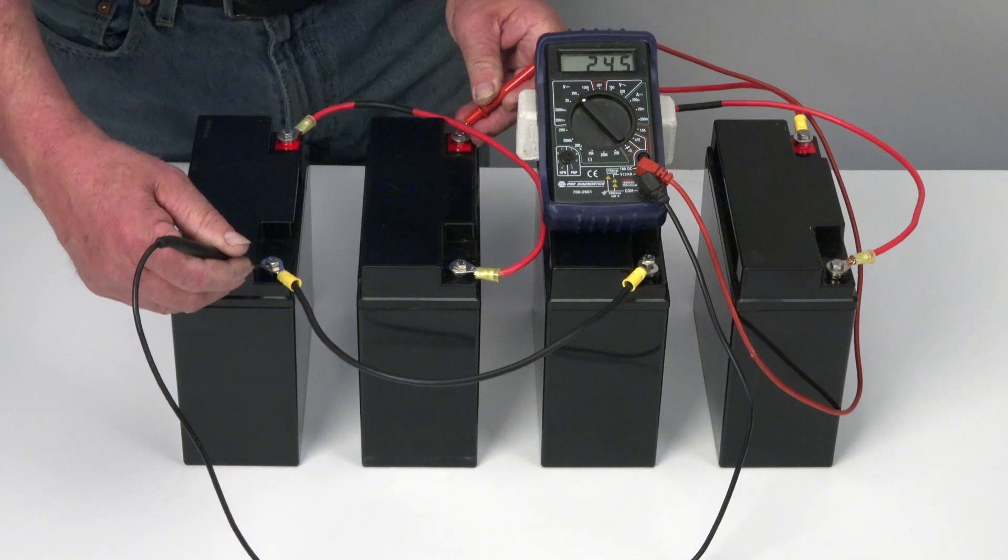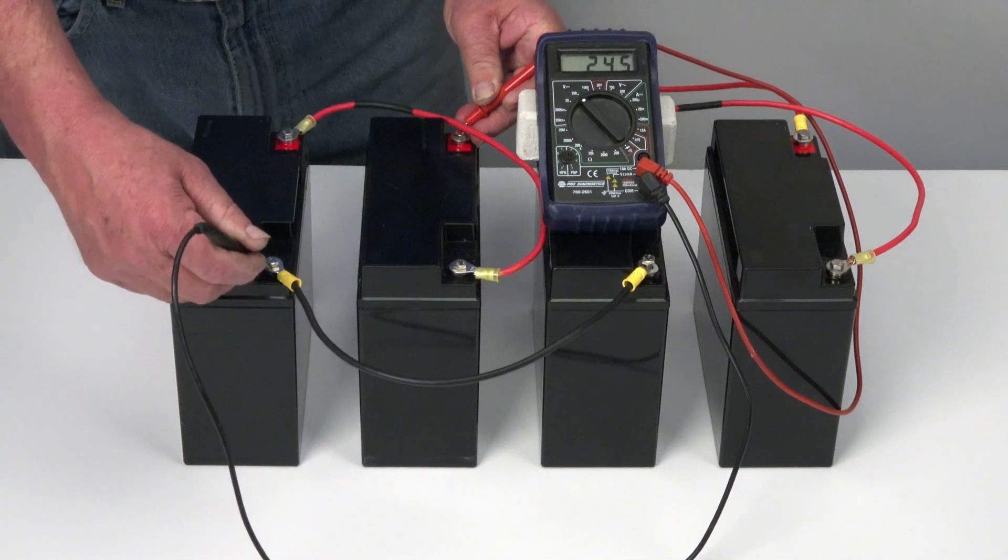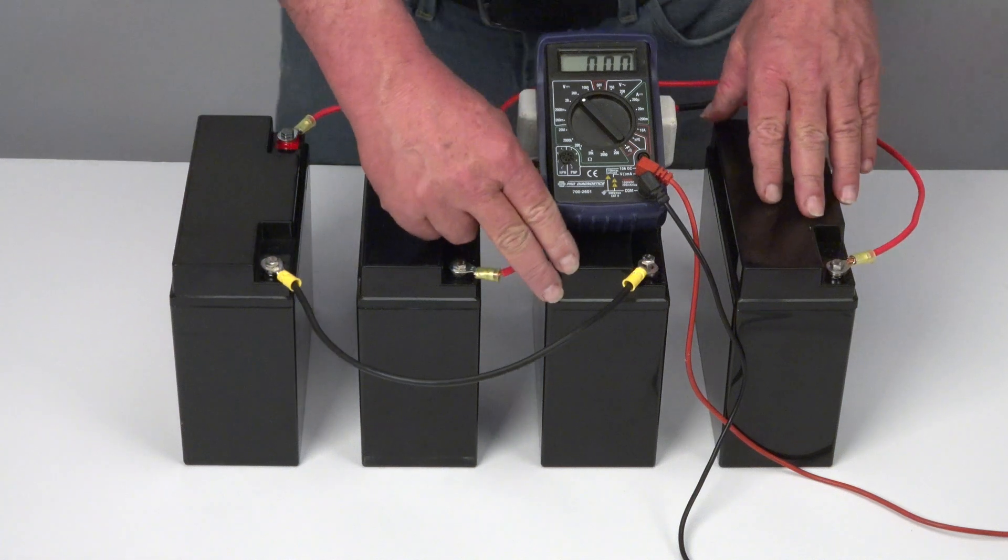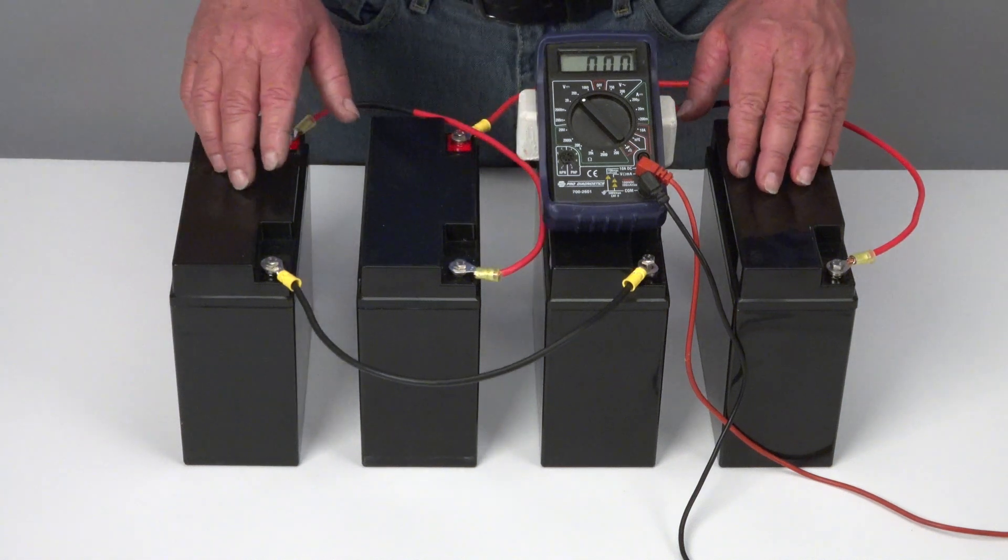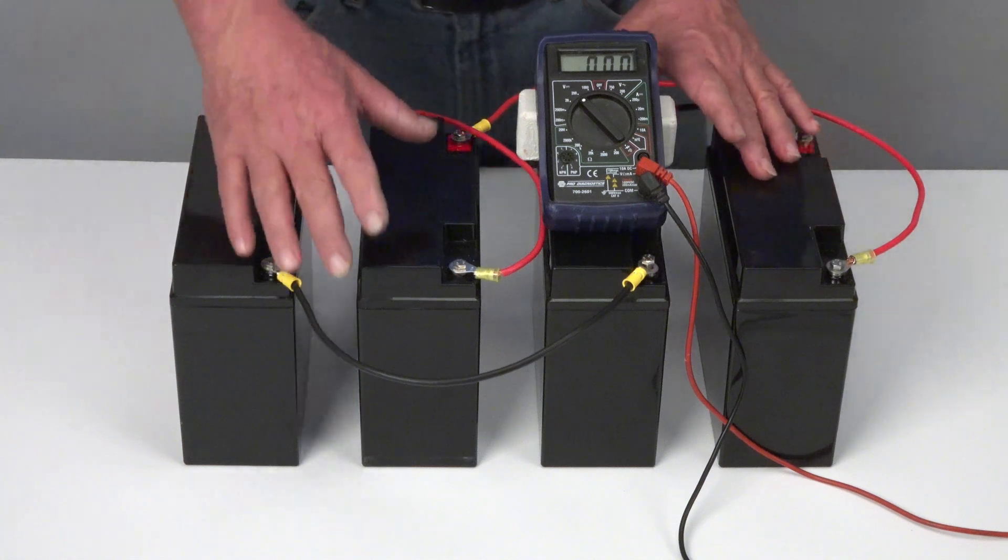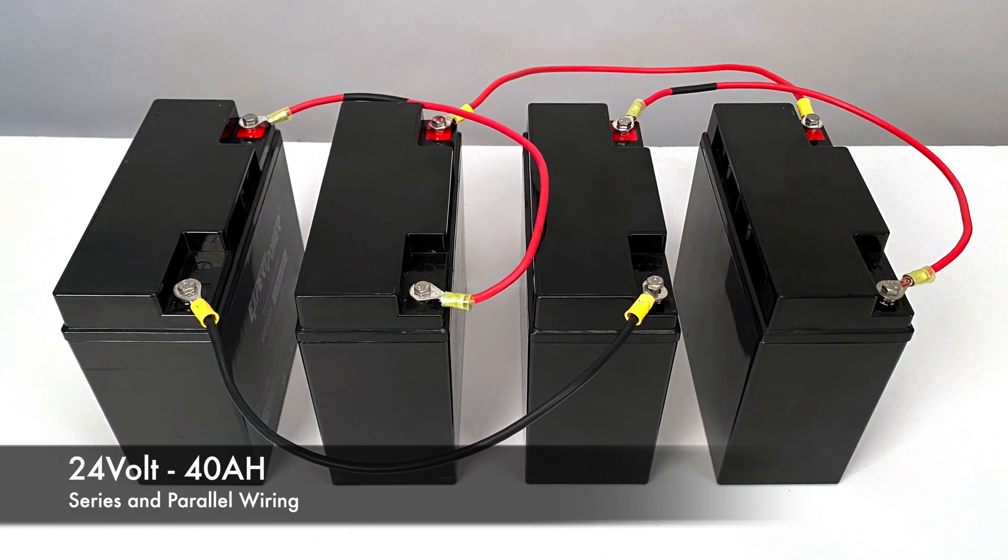So this is where you hook up your motor. So if you're a fisherman with a 24 volt motor, you now have doubled your runtime by adding 24 volt systems in parallel.